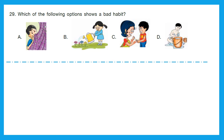Question 29: Which of the following options shows a bad habit? A — the boy is picking his nose. Very bad. B — the girl is watering the plant, which is a good habit. C — the boy is getting his nails trimmed, very good. D — the boy is bathing. So option A does not look like a good habit — it's a bad habit. Option A is the right answer.